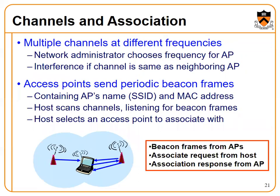Channels and associations: multiple channels have different frequencies, and the network administrator chooses the frequency for the access provider. If a channel is the same as a neighboring access point, interference occurs. Access points periodically send beacons containing the SSID and MAC address. The host scans channels listening for beacons, then selects and associates with an access point.